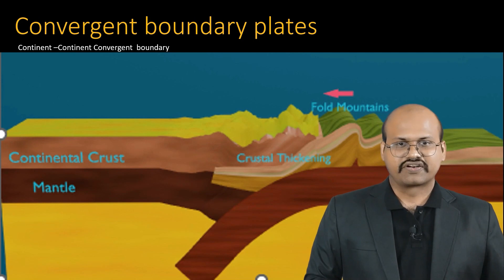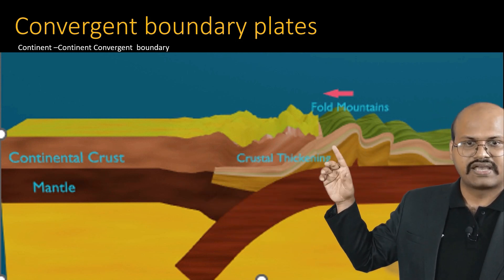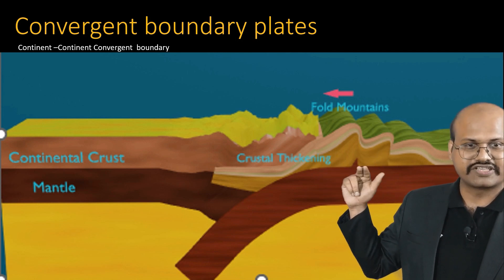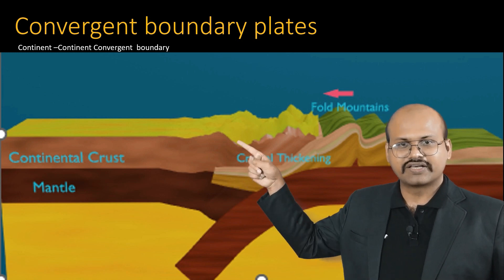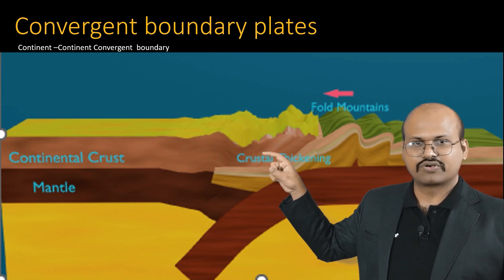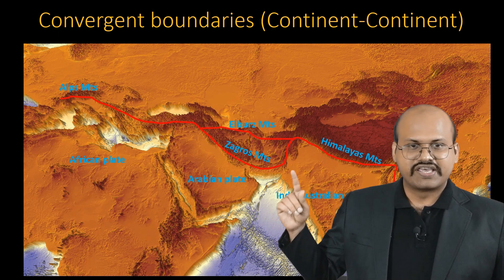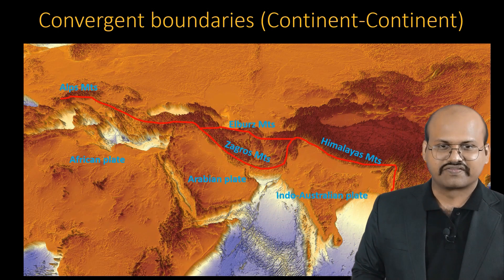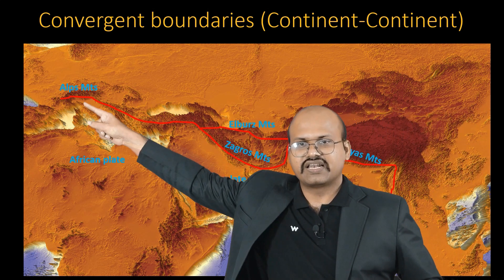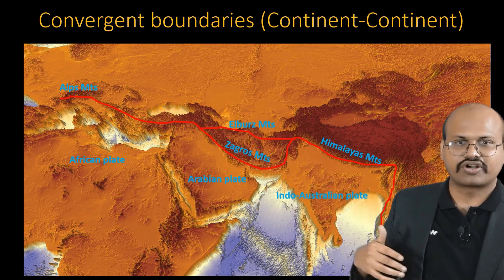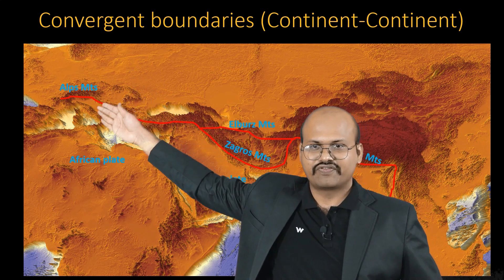At continent-continent convergent boundaries, two continental plates move towards each other forming fold mountains. The continental crust does not subduct because it is less dense than the asthenosphere — instead, the mantle part subducts while the crust thickens. The Himalayas are the best example: the Indo-Australian plate subducting under the Eurasian plate formed a long chain of mountains extending to the Alps. The Arabian plate subducting under the Eurasian plate and the African plate subducting under the Eurasian plate also form mountain chains in this region.